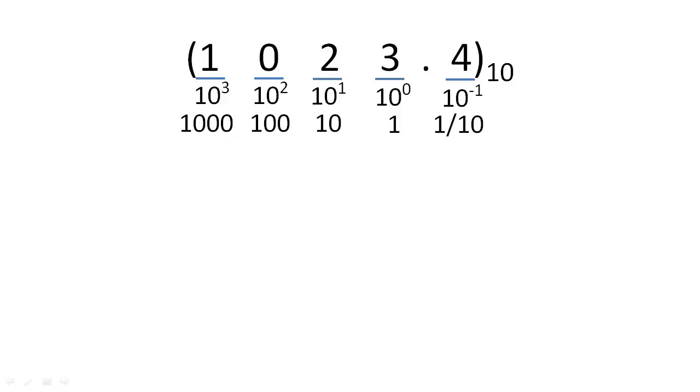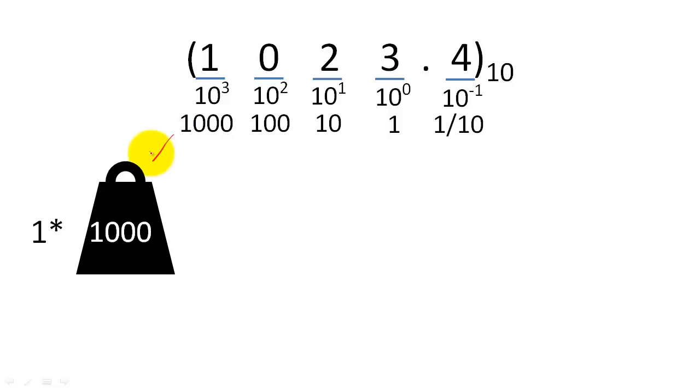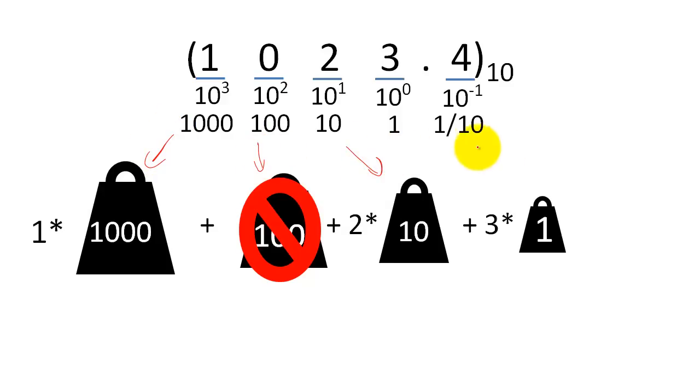We find the value of the number by multiplying the symbol by the weight of its position. So here, we have one one-thousandth, zero one-hundredths, two tens, three ones, and four tenths.